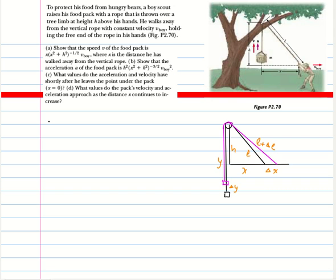This is a question from Resnick-Halliday. To protect his food from hungry bears, a boy scout raises his food pack with a rope that is thrown over a tree limb at height h above his hands. He walks away from the vertical rope with a constant velocity v-boy holding the free end of the rope. Show that the speed v of the food pack is x times (x² + h²)^(-1/2) times v-boy, where x is the distance he has walked from the vertical rope.